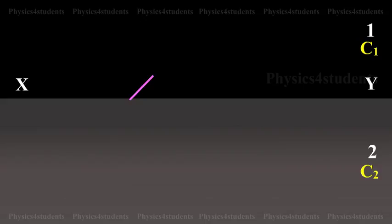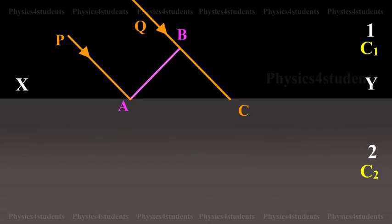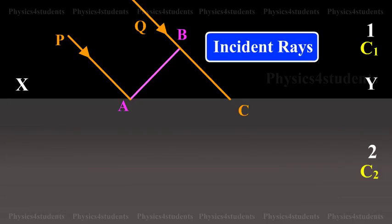Consider a plane wavefront AB incident on the refracting surface at A. PA and QB are perpendiculars drawn to AB at A and B respectively. Hence, they represent incident rays.